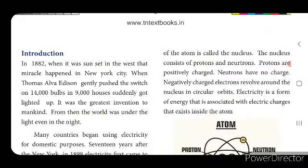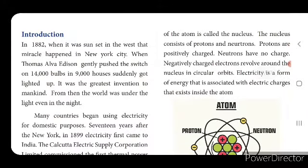In 1882 in New York City, Thomas Alva Edison switched on the power, and 14,000 bulbs in 9,000 houses suddenly got lighted up. It was the greatest invention to mankind. Think for one second — if there is no electricity, how will you manage without electricity? Nowadays in the present situation, we can't run our life even for one or two hours.